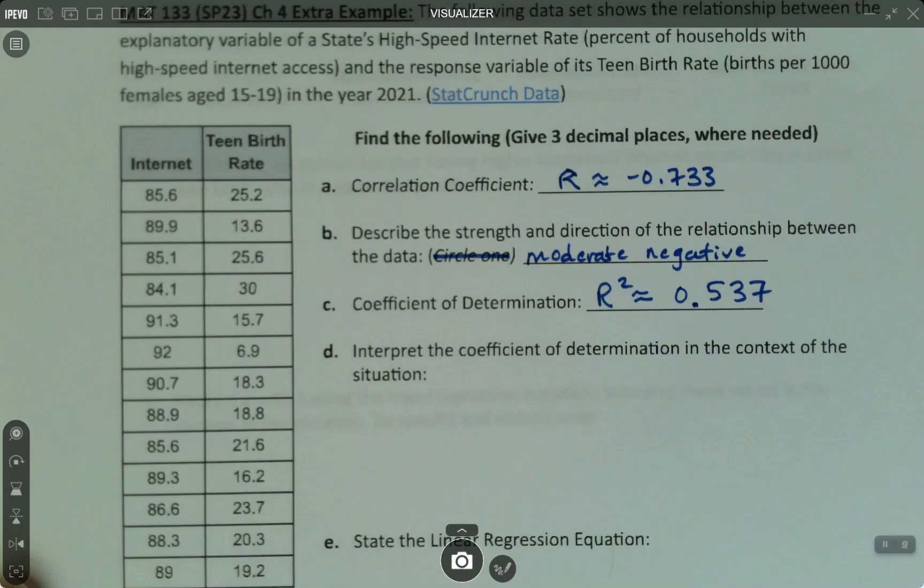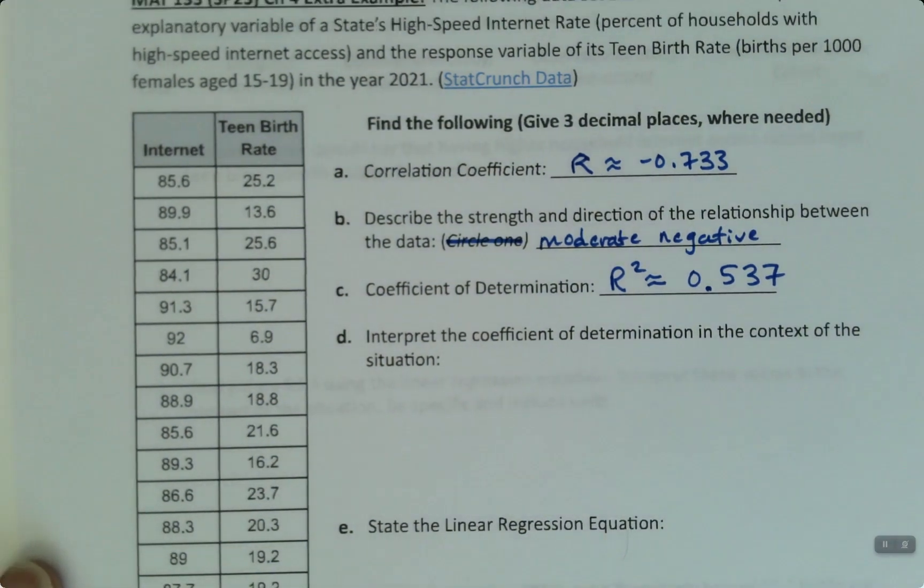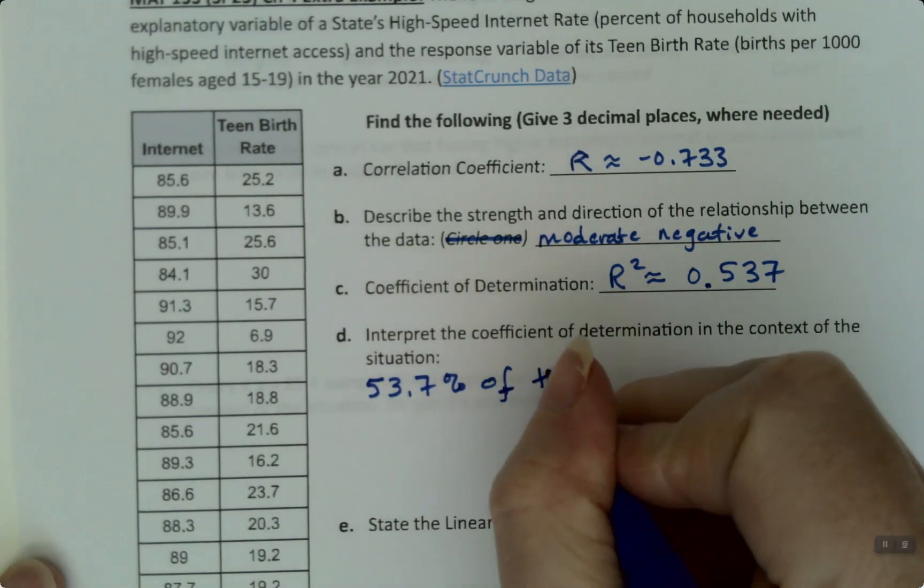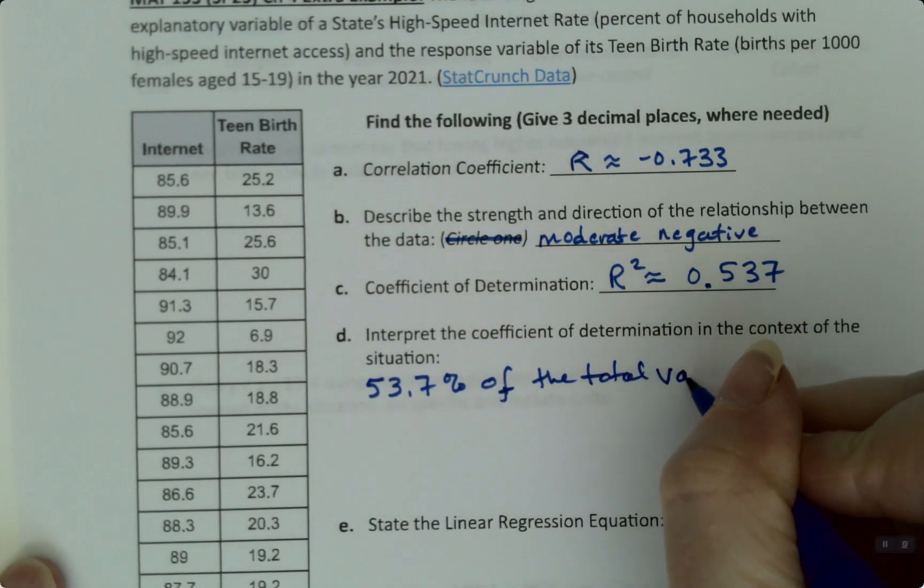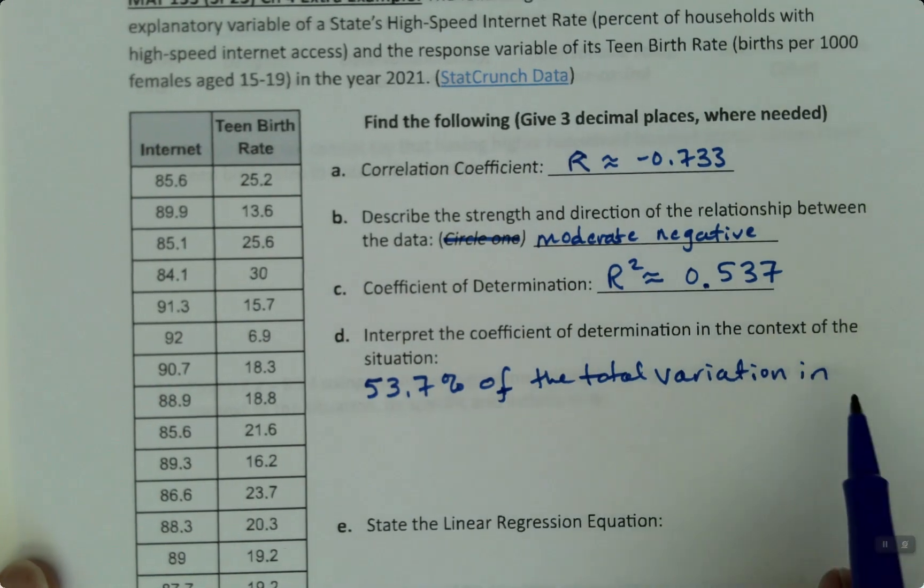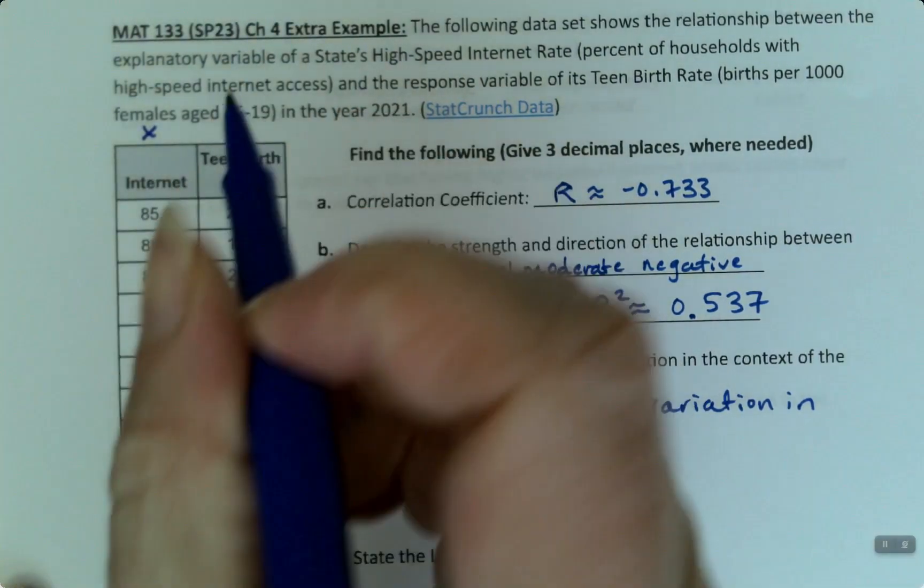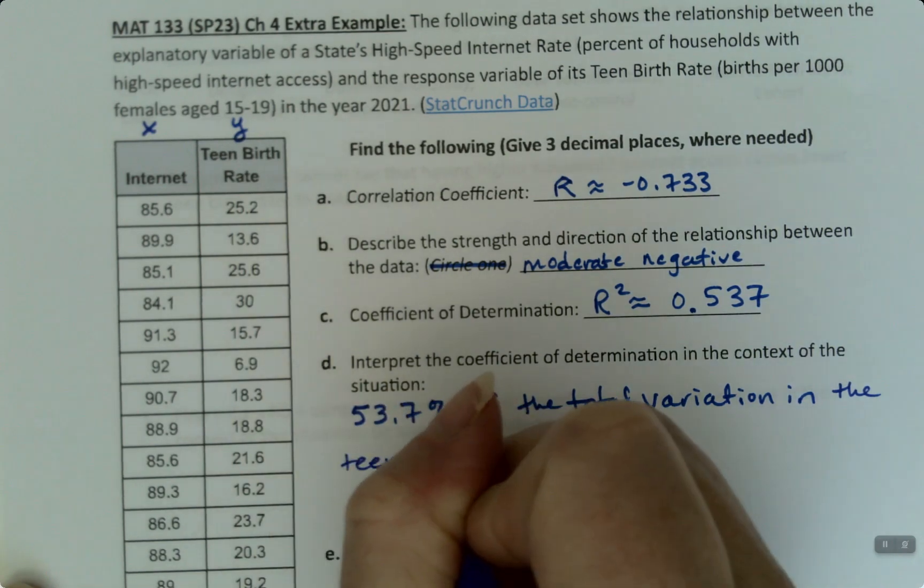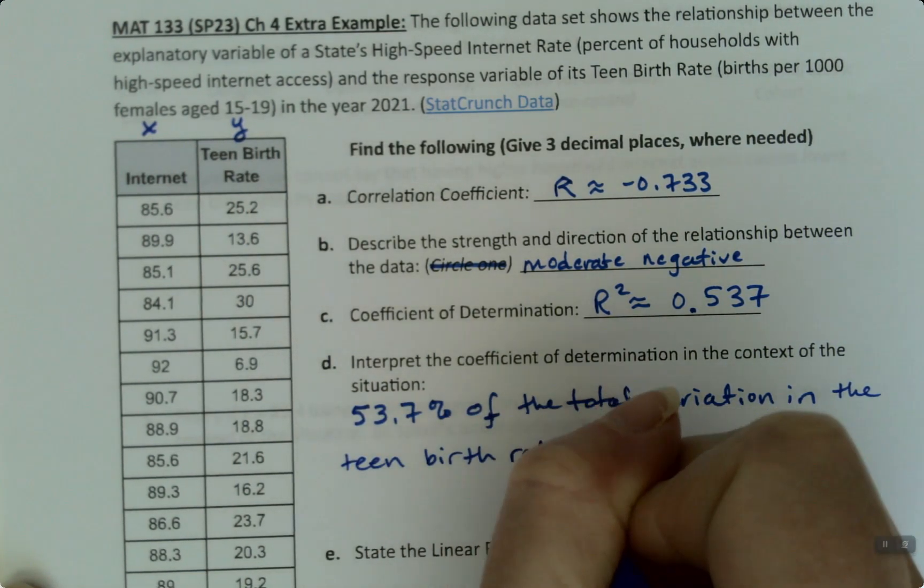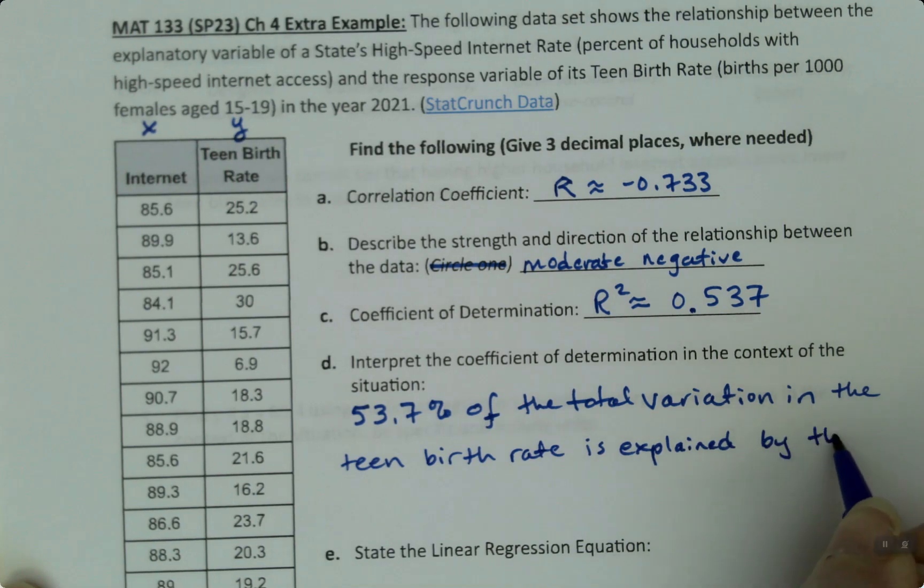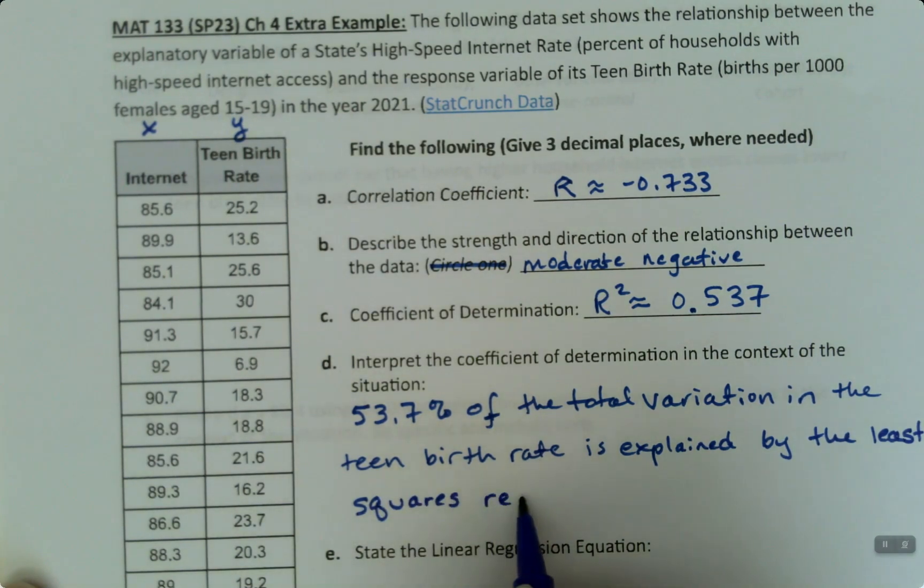So let's go back and write it that way. So the first thing we have to do is change this to a percent. So we're going to write this as 53.7% of the total variation in Y was in quotes. And for us, the Y variable is the teen birth rate. It's the response variable. So that's what we'll say. In the teen birth rate, is explained by the least squares regression line. Done.